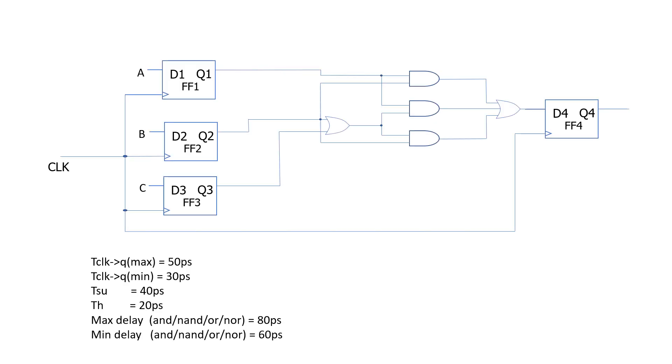Let's look at the details provided for the circuit in picture. T clock to Q max which is 50 picosecond, T clock to Q min 30 picosecond, setup time 40 picosecond, hold time 20 picosecond. These parameters are the same for all the flops for simplicity. Now the max delay for all the logic gates in picture is 80 picosecond and min delay is 60 picosecond.